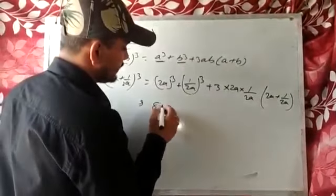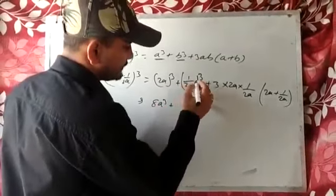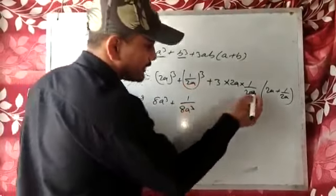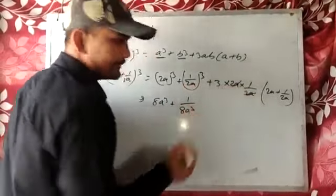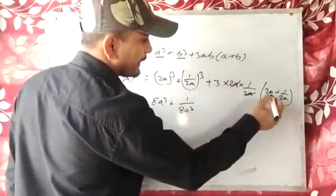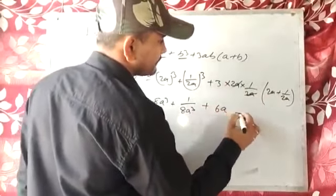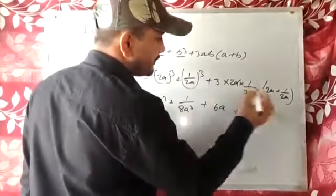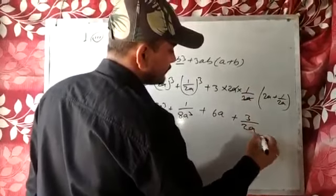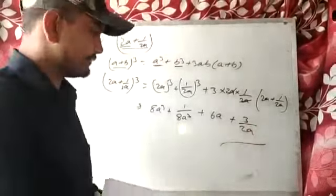2a whole cube means 8a cube, plus 1 by 8a cube. Here we can cut 2a with 2a, leaving 3. So 3 multiplied by 2a gives plus 6a, and 3 multiplied by 1 by 2a gives 3 by 2a. So the answer is 8a cube plus 1 by 8a cube plus 6a plus 3 by 2a.